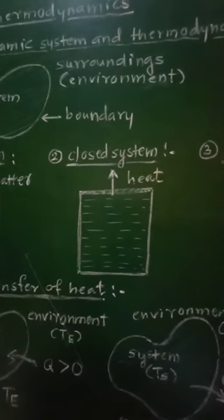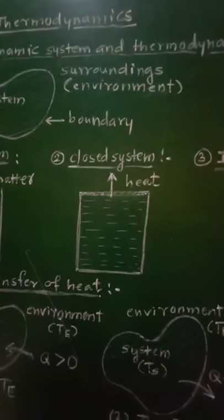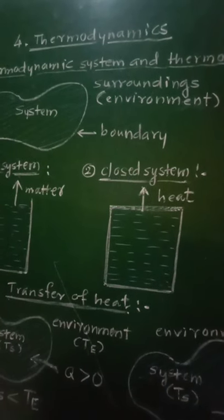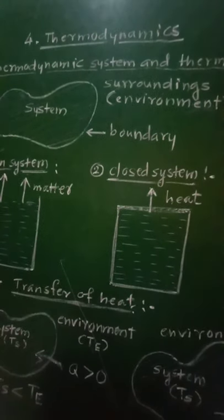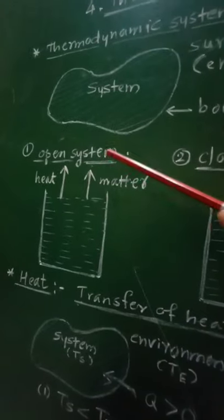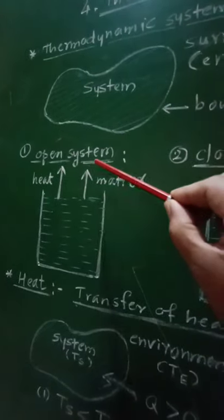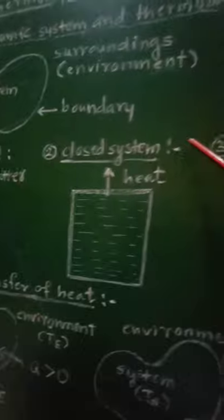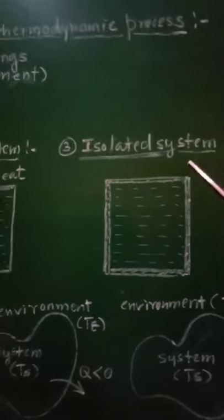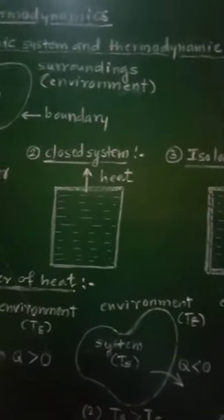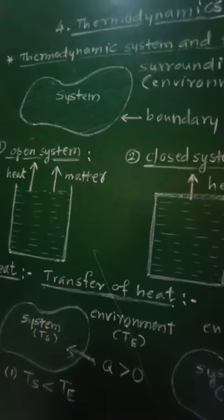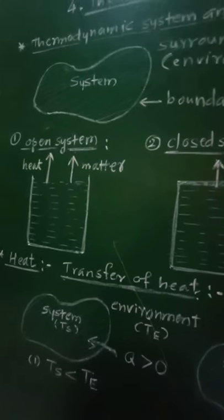The thermodynamic system is classified into three different groups: the open system, the closed system, and the isolated system. These are the three different types of thermodynamic systems.